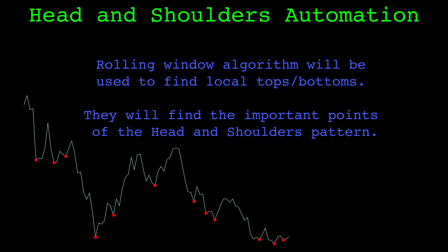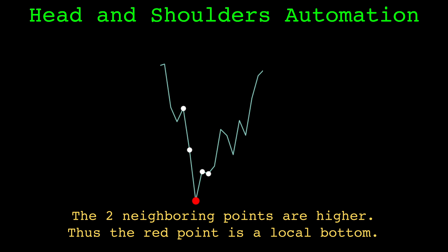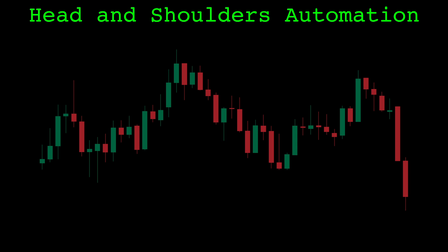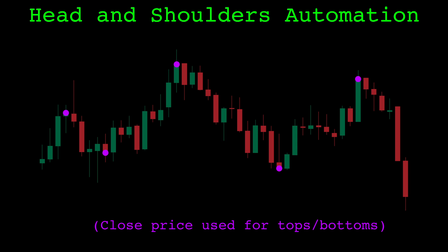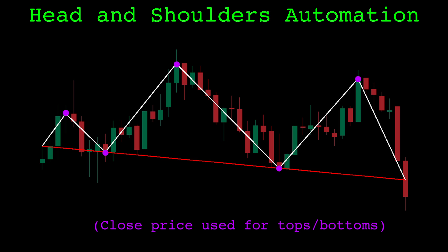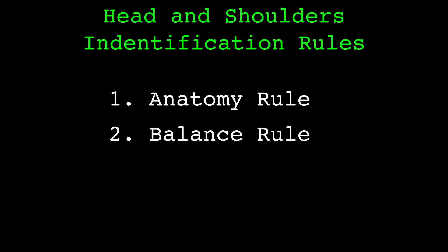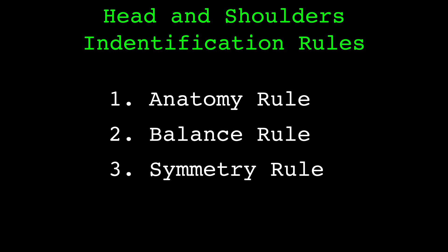We can automate this pattern by using the rolling window algorithm to find local tops and bottoms in the price. I cover the rolling window algorithm in detail in my video about essential algorithms for chart pattern automation, but quickly it just checks if a point is the highest or lowest point compared to its neighboring points. At any point in time we can look at the last five major turning points and see if they have the shape of a head and shoulders pattern.